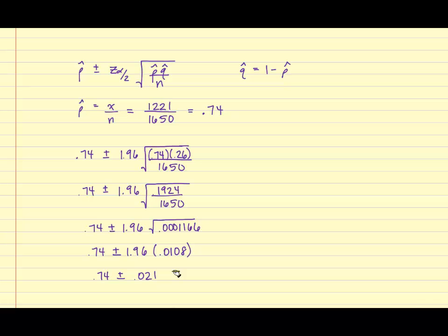In order to get the lower bound, I'm going to take 0.74 minus 0.021, and I obtain 0.719.